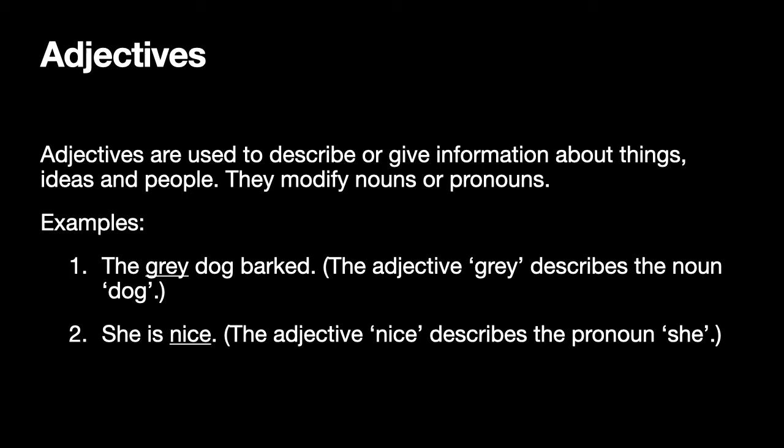Some examples of adjectives: in the first sentence, 'the grey dog barked,' the adjective is 'grey' and it is describing the noun 'dog.' What kind of dog is it? It is a grey dog, so the noun 'dog' is described or modified by the adjective 'grey.' In the second sentence, 'she is nice,' the adjective is 'nice' and it describes the pronoun 'she.' So the adjective 'grey' described the noun 'dog,' whereas the adjective 'nice' describes the pronoun 'she.'